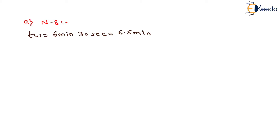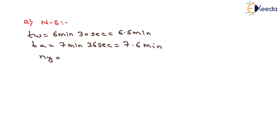Similarly, TA will be equals to the journey time of the opposite direction, that is 7 minutes and 36 seconds, so it will be equals to 7.6 minutes. NY will be equals to number of overtaking vehicles minus number of overtaken vehicles, which equals 3.5 minus 5, giving minus 1.5. NA will be equals to the number of vehicles travelling in the same direction, given by the observer of the opposite side, that is 179.